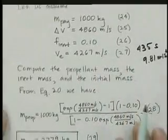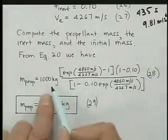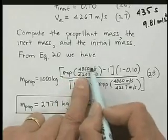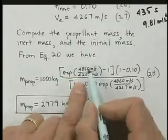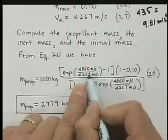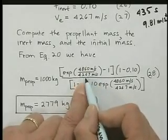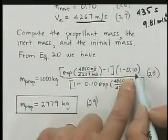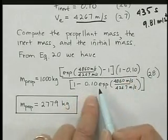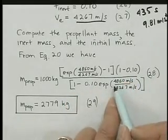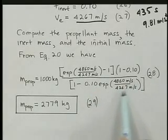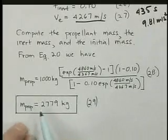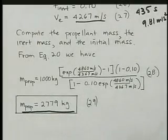So plug in these values into our propellant equation, equation 20. So here we see how the numbers work. Here's 1,000 kilograms for the payload. The exponential. Here's the delta V upstairs. And the VE, which is ISP times G downstairs. That's in meters per second. That's this. Minus 1, 1 minus the inert mass fraction, which is 0.1. And then downstairs, 1 minus inert mass fraction, 0.1. Again, exponential of the delta V over the VE, effective exhaust velocity, or ISP times G. And we get a number, 2,779 kilograms.